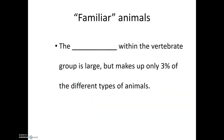The diversity within the vertebrate group is large, but they make up only 3% of the different types of animals. Even though this makes up only 3% of the diversity of animals, these are definitely the most familiar animals. I would say 9 out of 10 times if you ask someone to name an animal, they will mention a vertebrate — whether it's a cat, a dog, an elephant, or a lion. These are the animals that we would be most likely to go to a zoo and see.